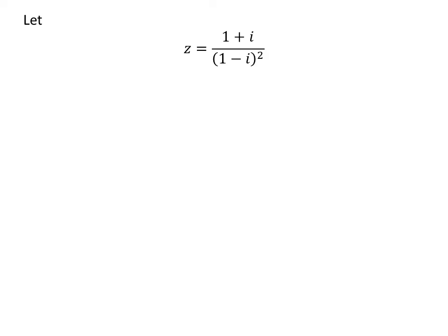Let us assume z be equal to 1 plus i upon square of 1 minus i. Expansion of square of 1 minus i in the denominator gives us z is equal to 1 plus i upon square of 1 plus square of i minus 2 times 1 times i.